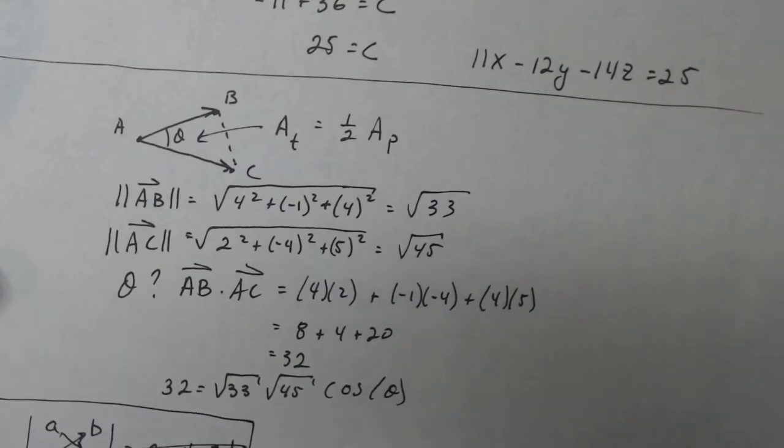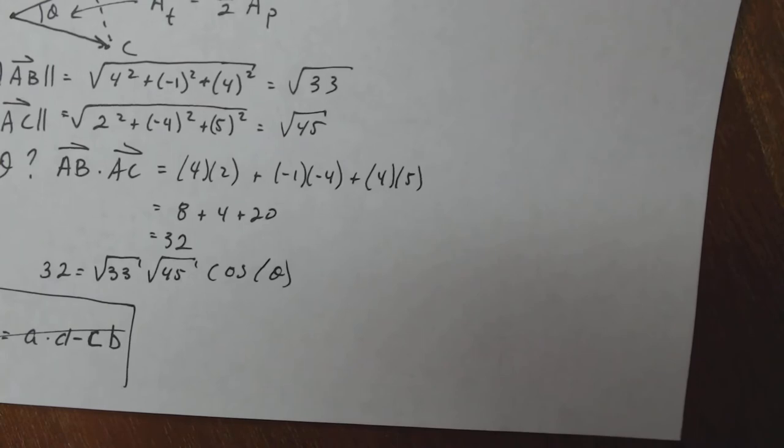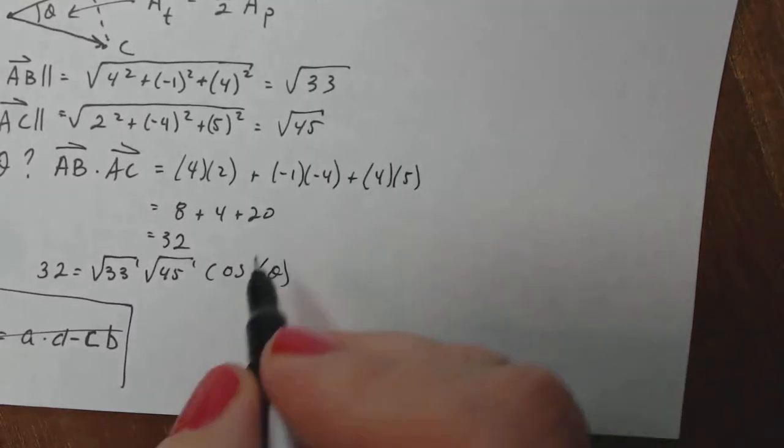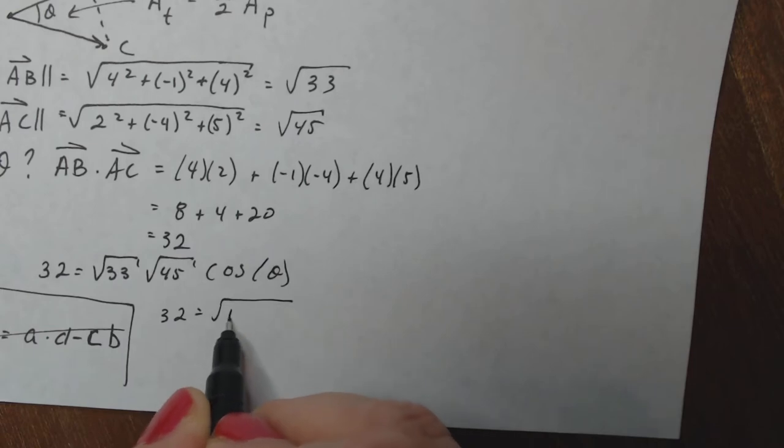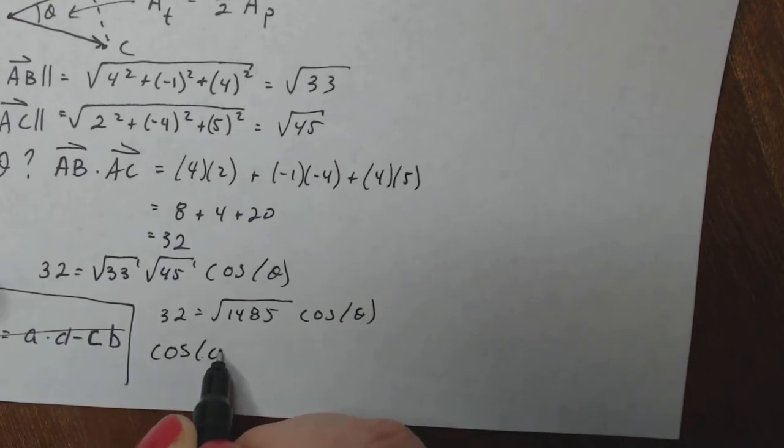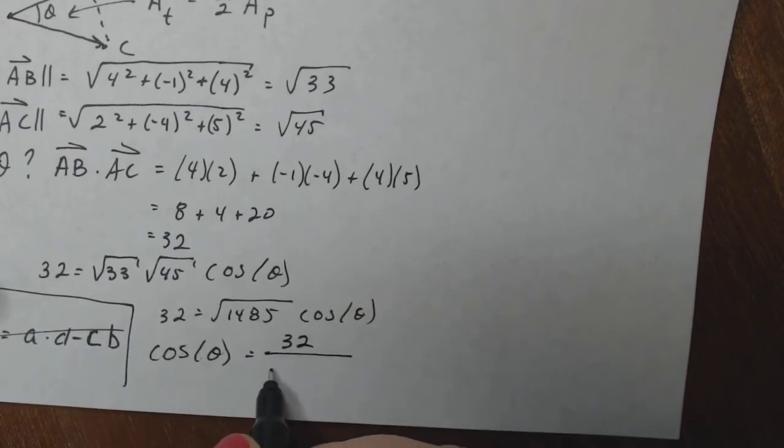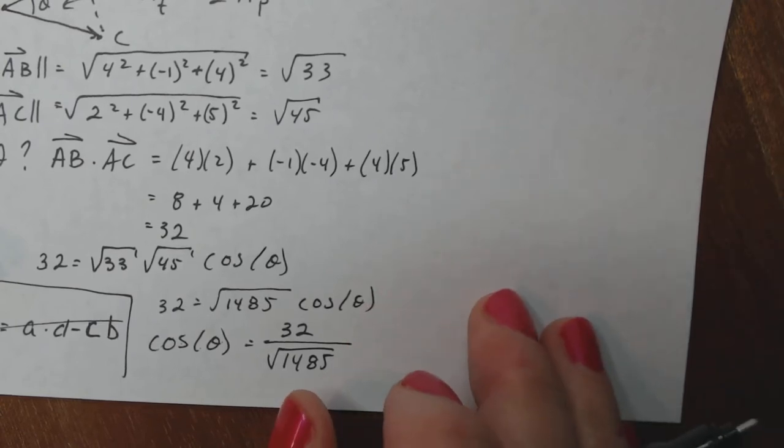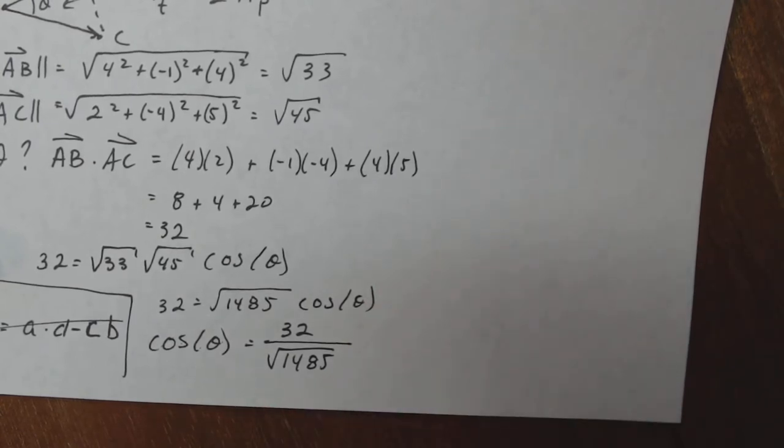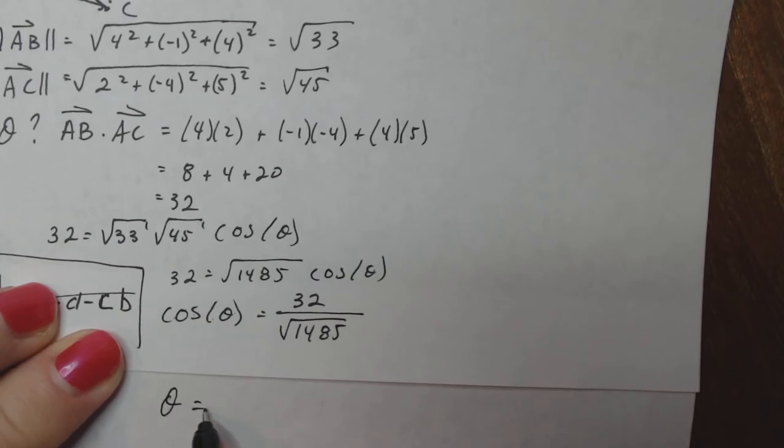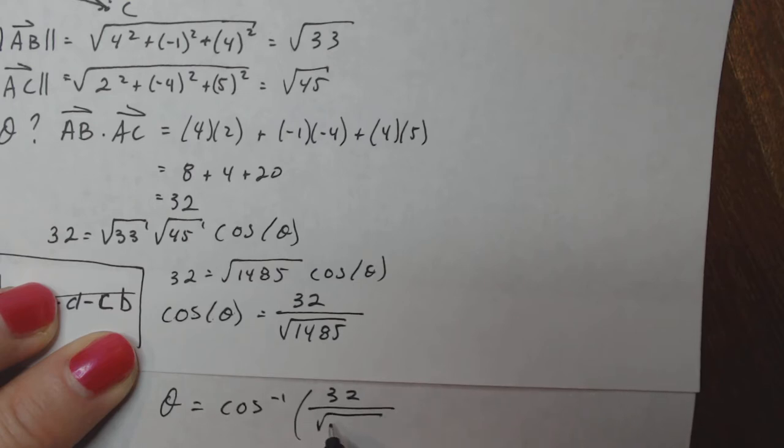So continuing on here, what's 33 times 45? A lovely 1485. So I have 32 equals the square root of 1485 times cosine of theta. Solving for cosine of theta, I have 32 over square root of 1485. If I continue on, theta is equal to the cosine inverse of 32 over square root of 1485.